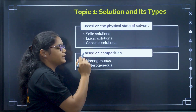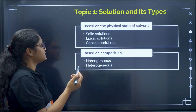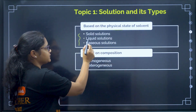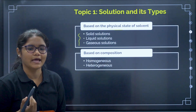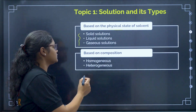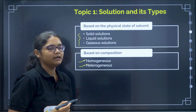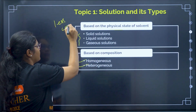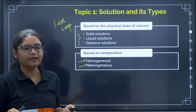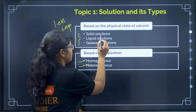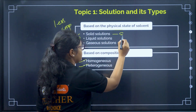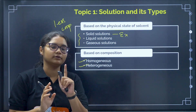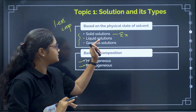First, solution and its types. Classification based on physical state of the solvent: we have three types — solid solution, liquid solution, and gaseous solution. Based on composition, we have homogeneous and heterogeneous. This topic is less important. There is one table in the NCERT book where examples are given — you only have to prepare those examples. Just revise that table and this topic is done.